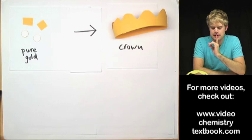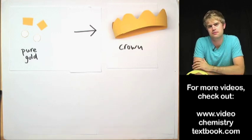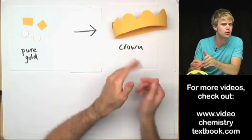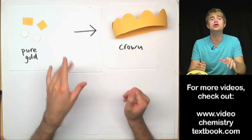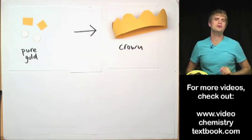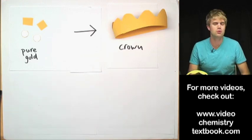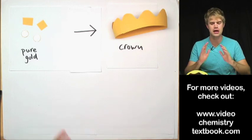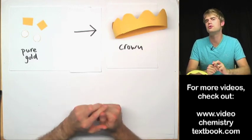So the king is getting increasingly suspicious and he needs to know whether the crown is made of pure gold or if there is some cheaper metal mixed in. So he calls on Archimedes, who is an incredibly well-known scientist, inventor and mathematician in ancient Greece, a great solver of problems.